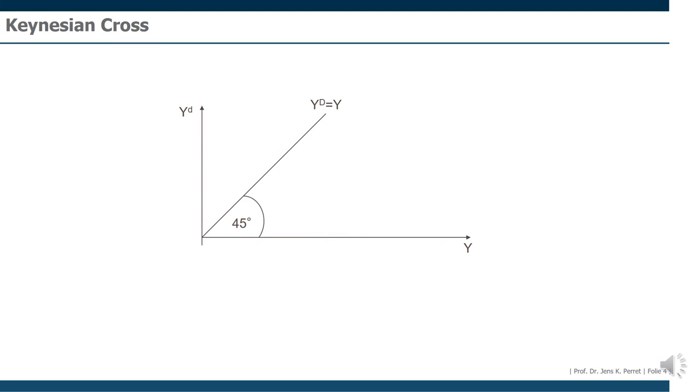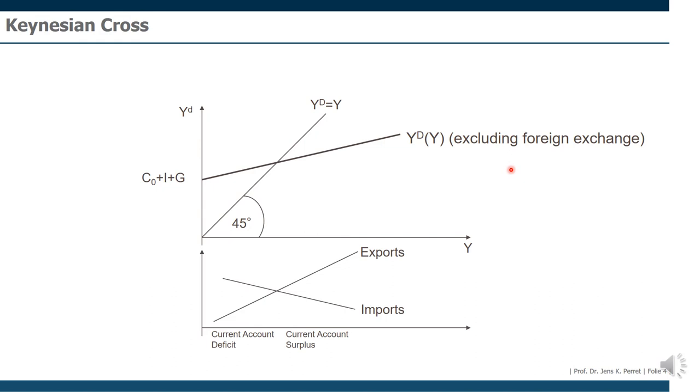This I'm going to do in a second graph. If I have here, I'm just copying the first part from the previous slide, so more or less the same axis. Here, effective demand. We have here the effective demand. And then, I start by including my demand function for a closed economy. So this is excluding foreign exchange.